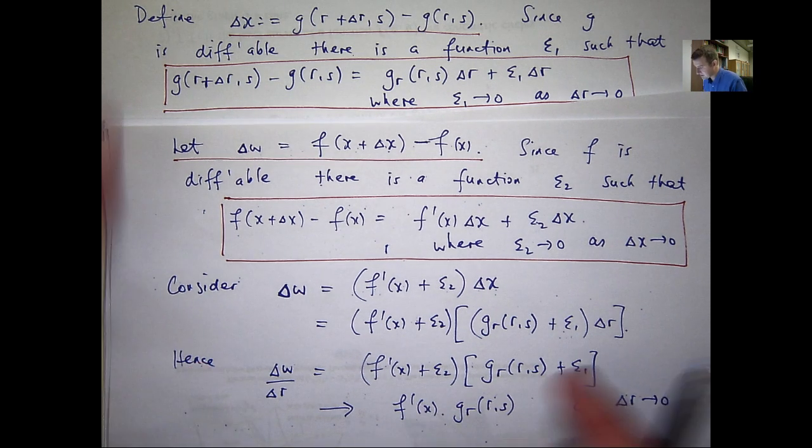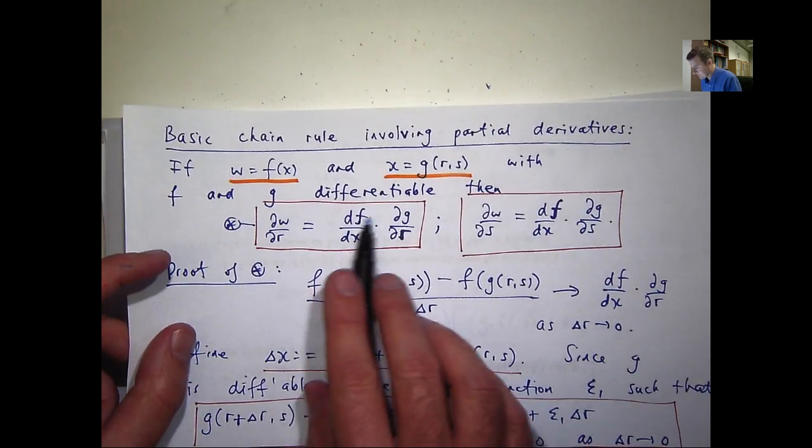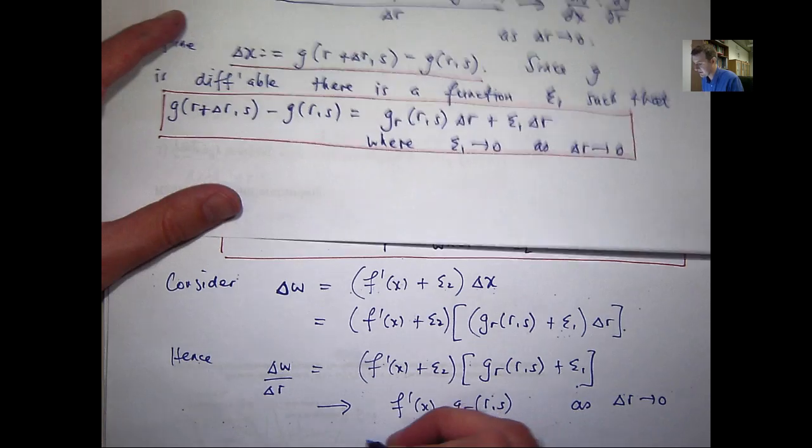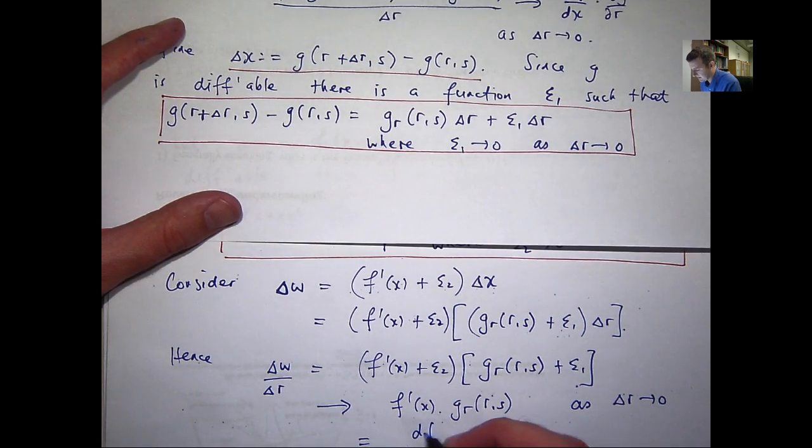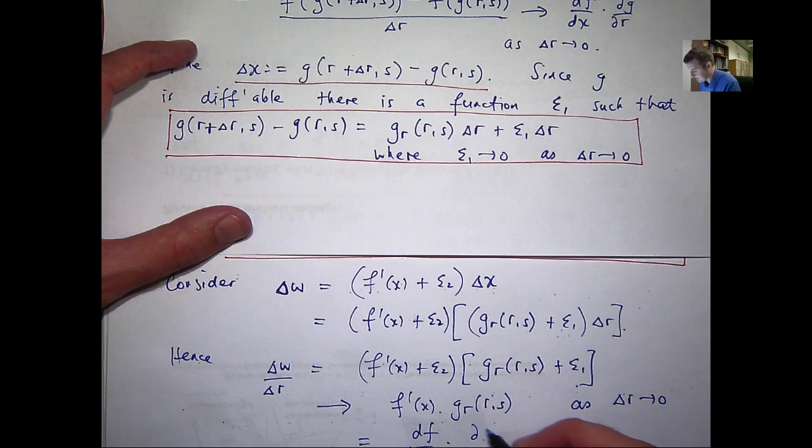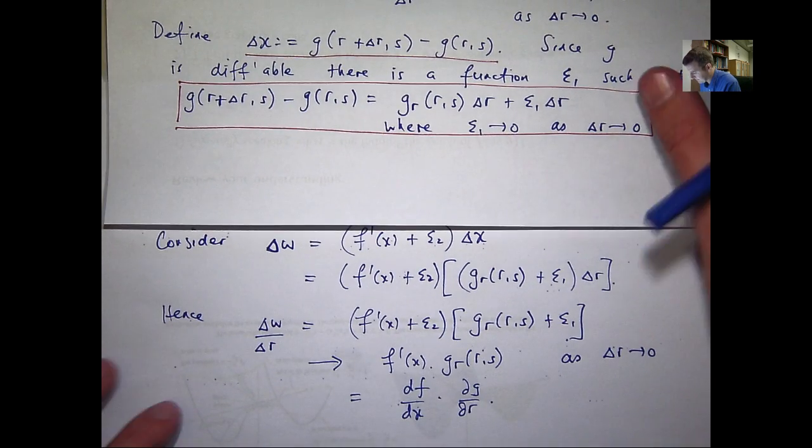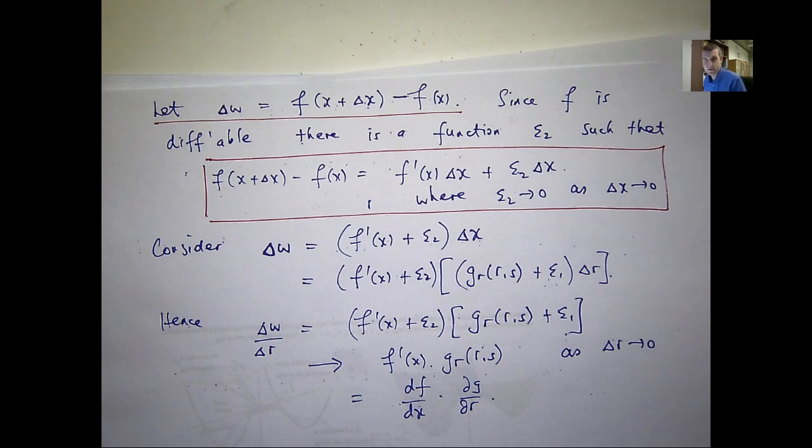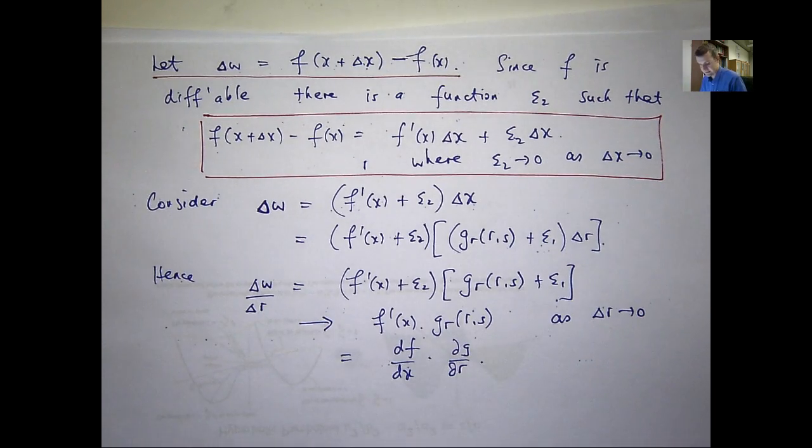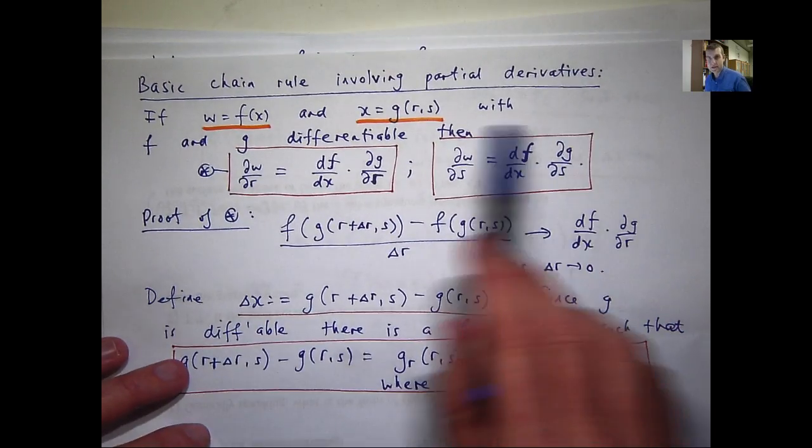So, this is just df/dx with straight d's, and this is just dg/dr, the partial derivative. So, if we wanted to write it out just like we did in star, we end up with something like that. Okay. So, we've finished.